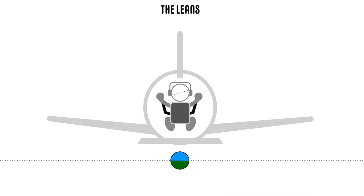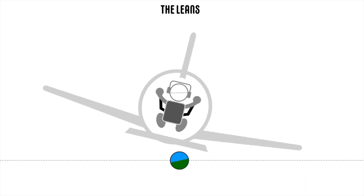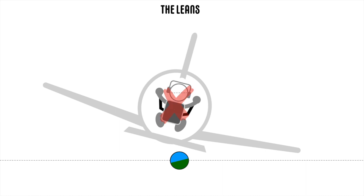The vestibular system works correctly now and registers this sudden turn, since the acceleration forces are stronger when the aeroplane rolls faster. But now, in level flight, the pilot experiences the illusion that the aeroplane is banked too much in the opposite direction. The pilot is disoriented and, in response, may lean or bank in the direction of the unintended turn.